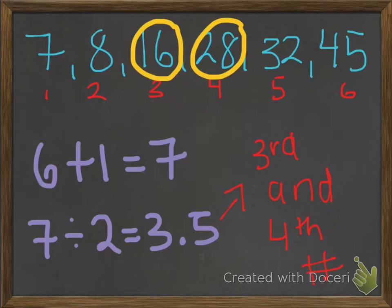Then, like we did before, you divide the sum by 2. 7 divided by 2 equals 3.5. This means that the third and fourth number is our middle number.